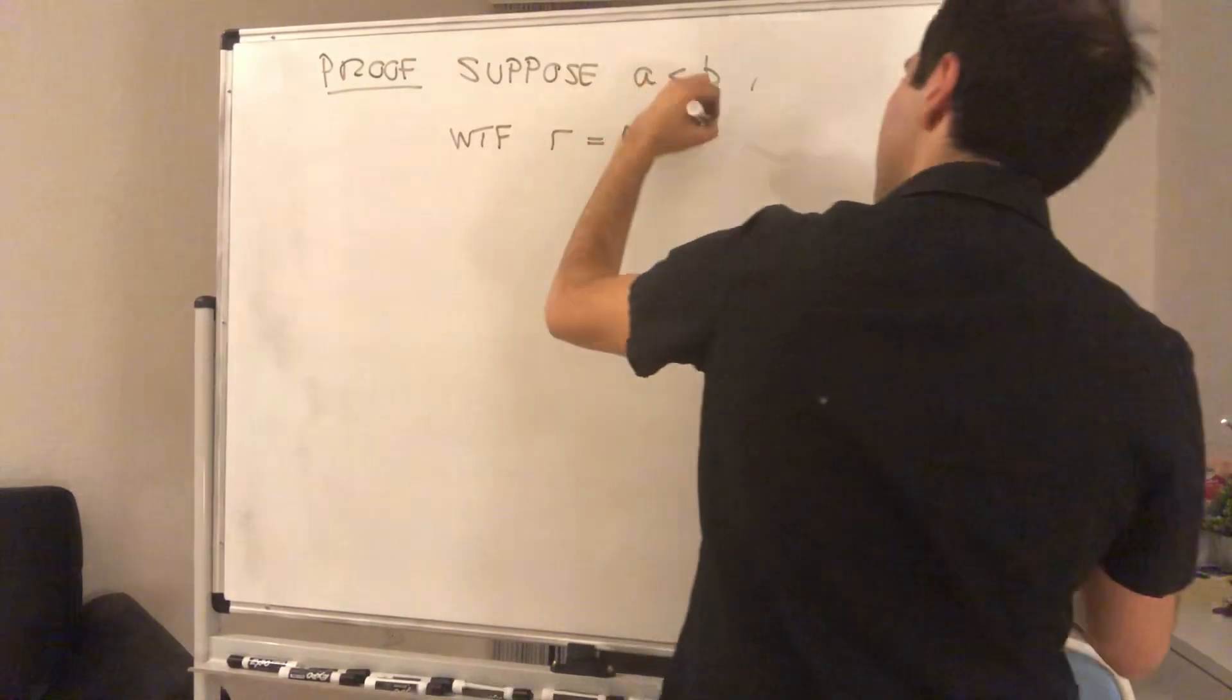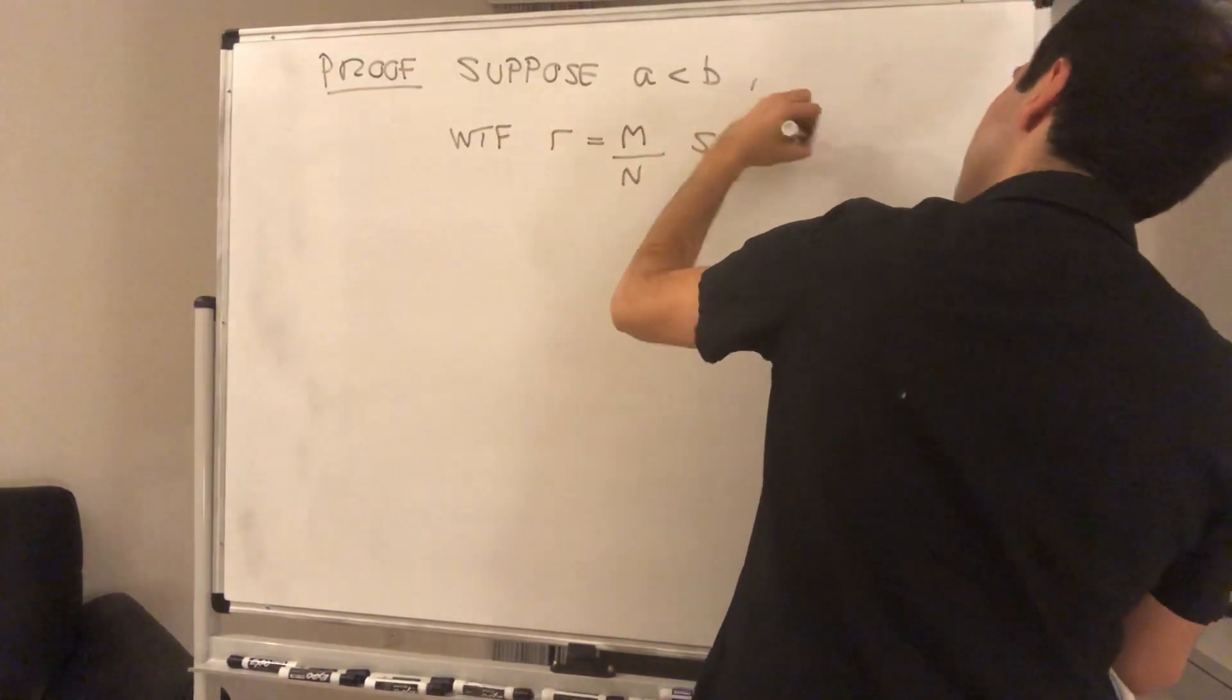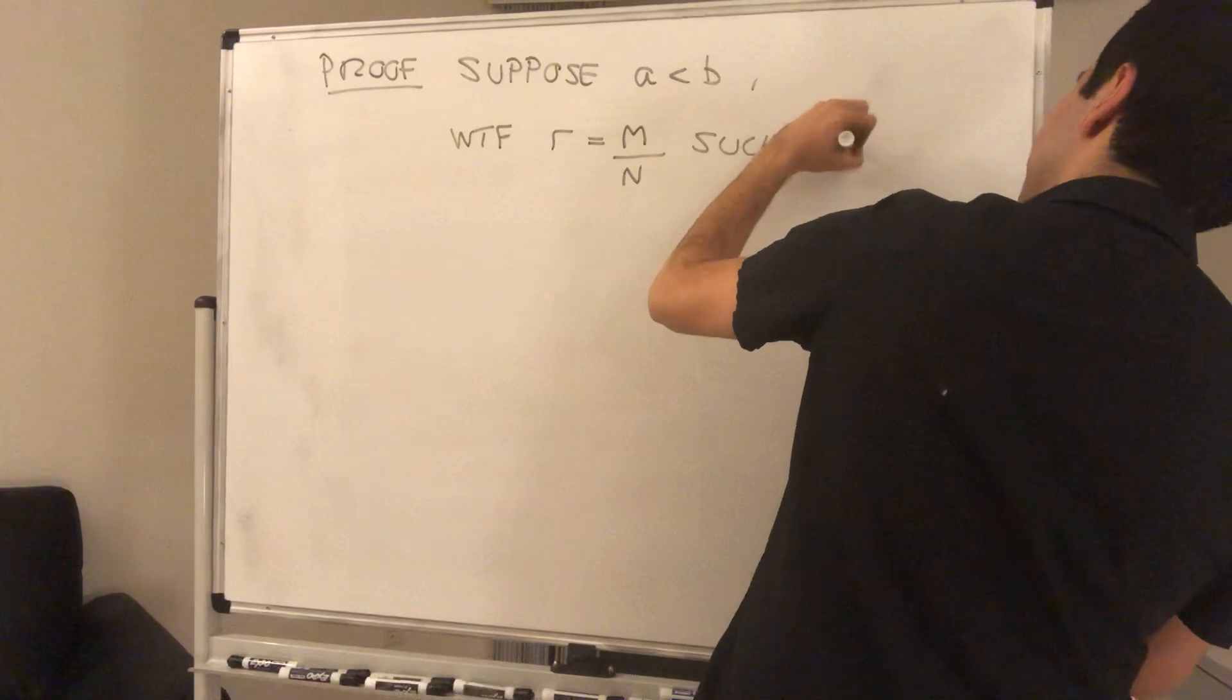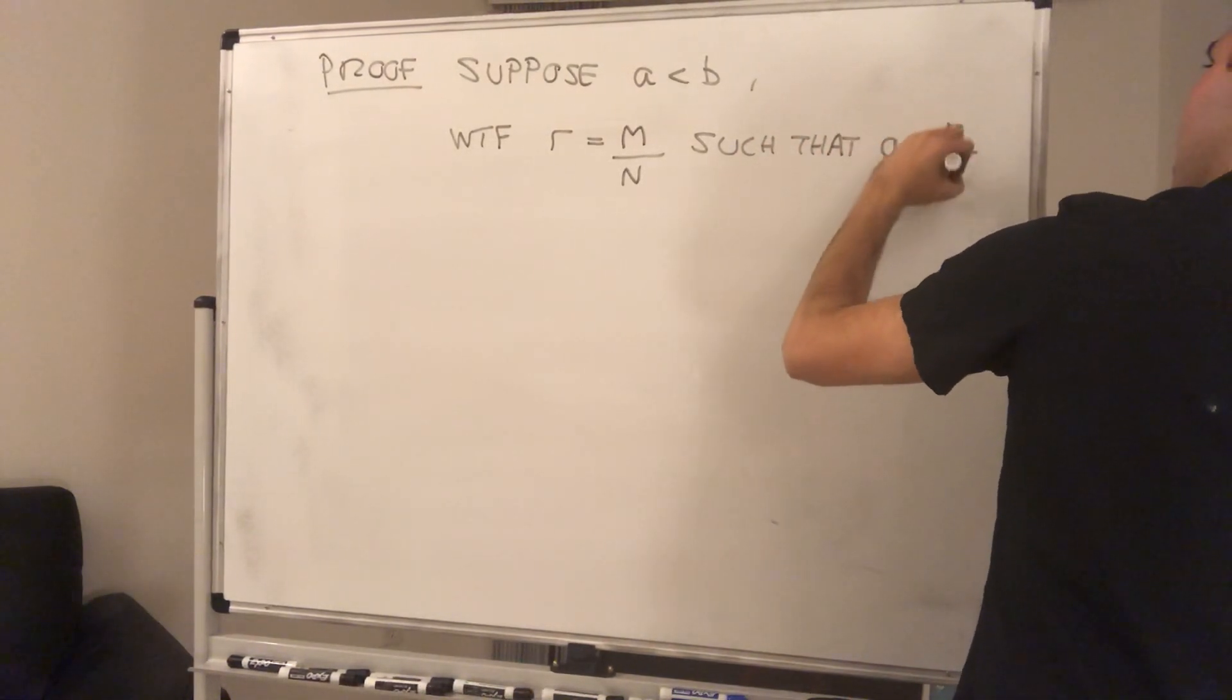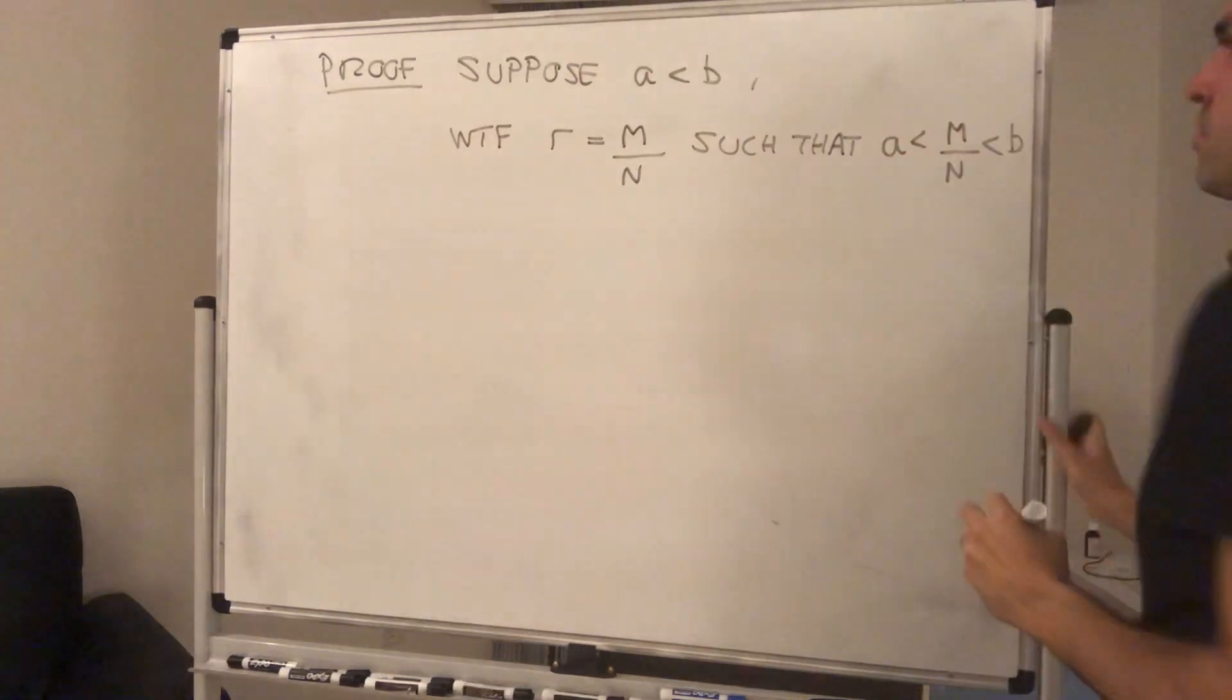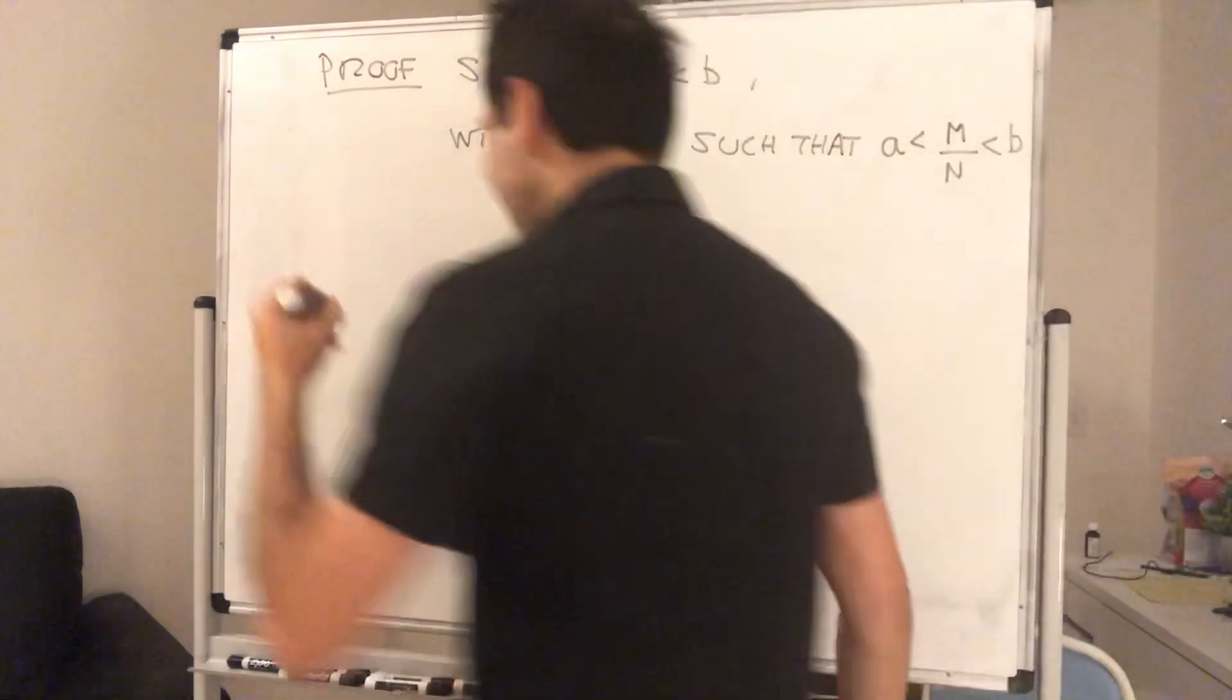What we want to find, we want to find a rational number r that's between the two. To find r, which is m over n, such that m and n are integers, such that r is between a and b.